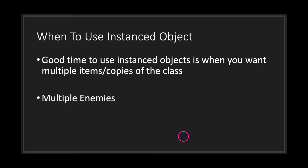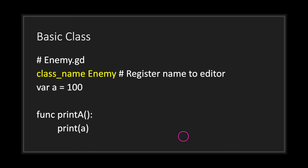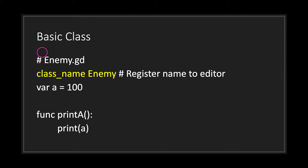Let's take having multiple enemies on screen as an example. Before you can instantiate an object you need to create a class. We've created our enemy class and we're registering a name into the editor using the class_name keyword, which I personally find to be a cleaner way of writing code. Note there is no extends keyword because we don't need to inherit anything if we don't plan on adding this class to the scene tree.